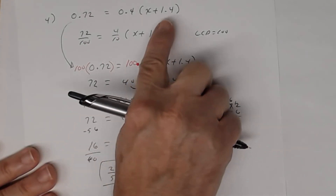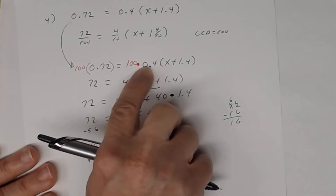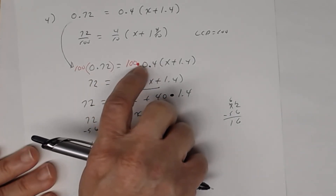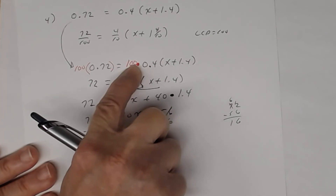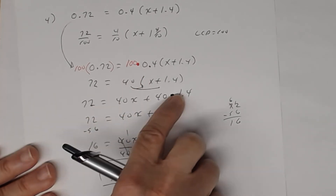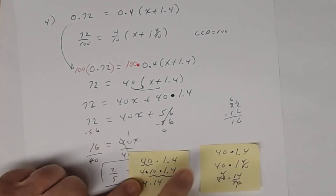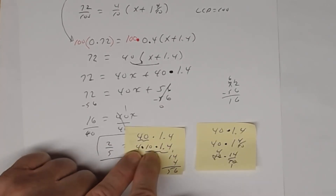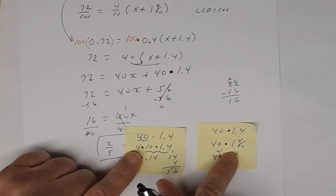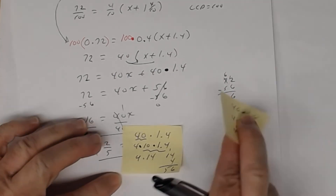That's how you handle a decimal inside parentheses. Multiply both sides by the appropriate power of 10 first, then when you distribute you may still have a decimal — handle it by recognizing the factor of 10 and moving the decimal point accordingly.